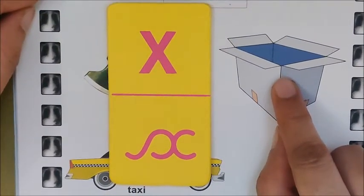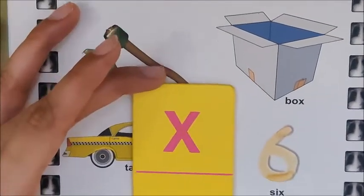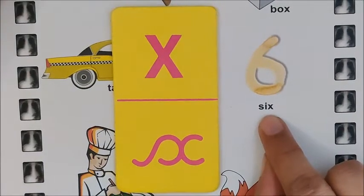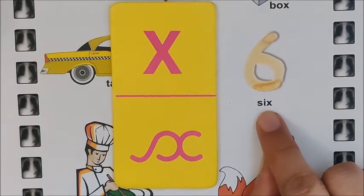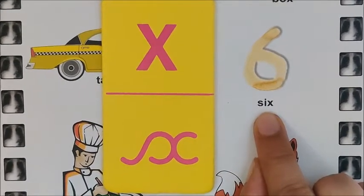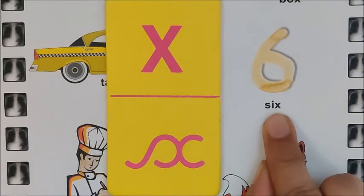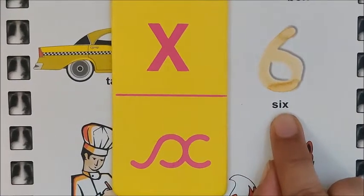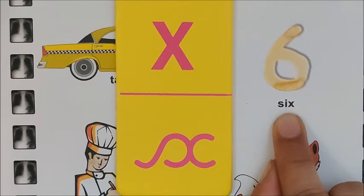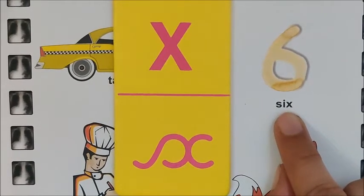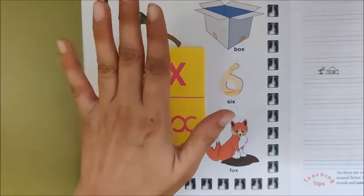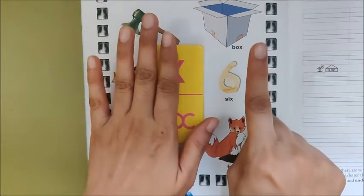Now let us go to the next picture. What is this, children? It is a number. Which number is this, children? Six. Repeat after me: Six. Six is a number and it also has the sound of X. Okay children, show me six fingers: one, two, three, four, five, six. This is number six.